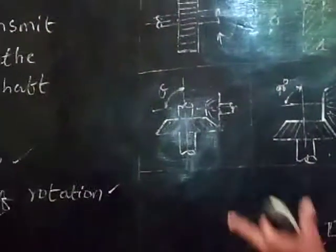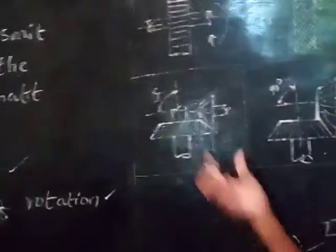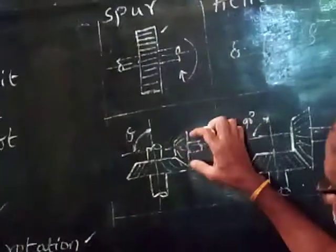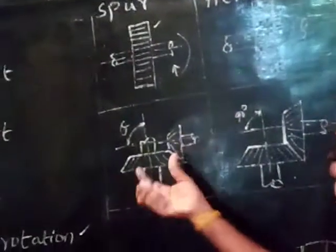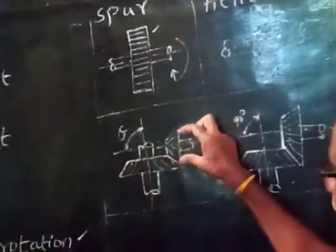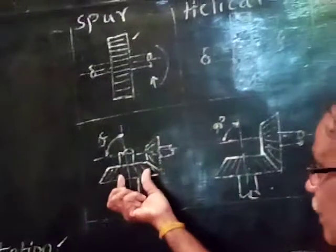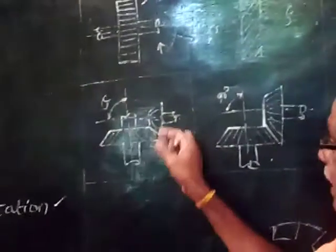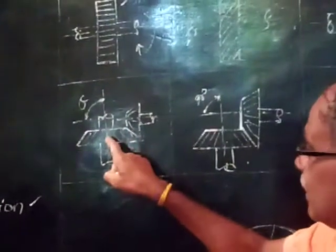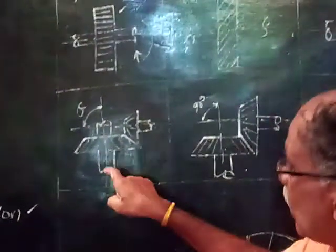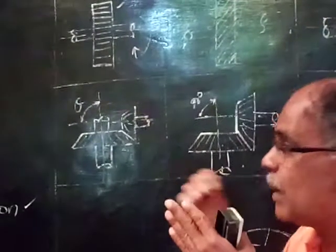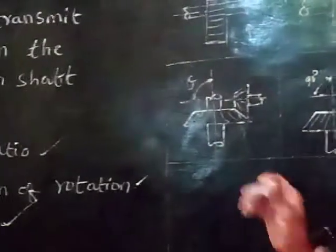This is the metallic gear. The other one is also a metallic gear. Here is the power that comes to the gear. This is the cone shape — a bevel gear.